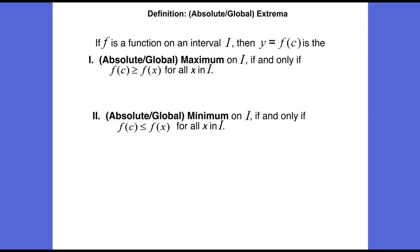Let's define absolute and global extrema. An absolute or global maximum is the highest possible y value on a function for a given interval. If f is a function on an interval I, then y equals f of c is the absolute or global maximum on I if and only if f of c is greater than or equal to f of x for all values of x in the interval I. Likewise, an absolute or global minimum on I occurs if and only if f of c is less than or equal to f of x for all x values on the interval I.